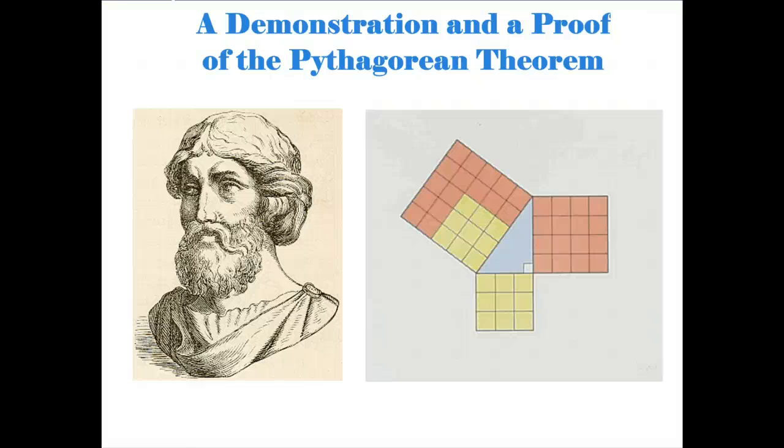G'day students. In the last video we discovered what the Pythagorean Theorem was. As a quick reminder, what it tells us is that for any right-angled triangle, the area of the square drawn on the hypotenuse is equal to the sum of the areas of the squares drawn on the other two sides.